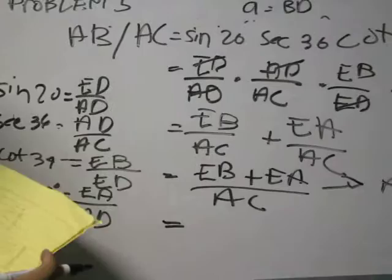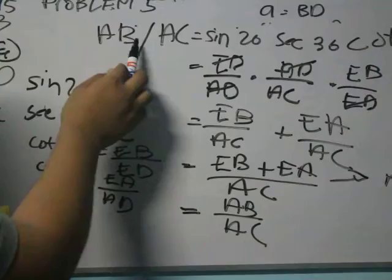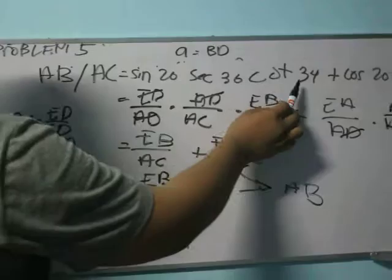So, the outcome would be AB over EC. The equation AB over EC is equal to sine 24 plus 2, 20, 36 is equal.